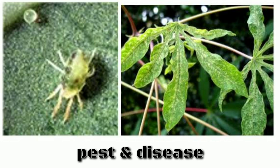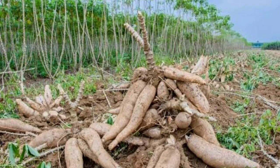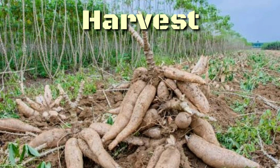Cassava mosaic and cassava bacterial blight are common diseases found in cassava. The common pests are mites and whiteflies. Integrated pest management practices can be followed to control pest attacks.